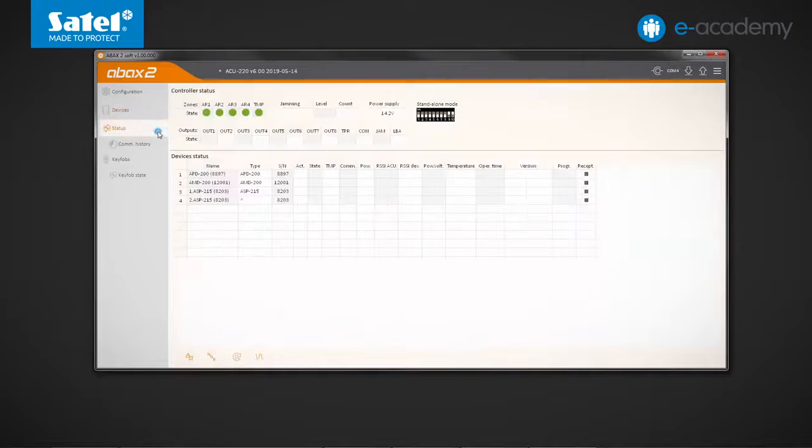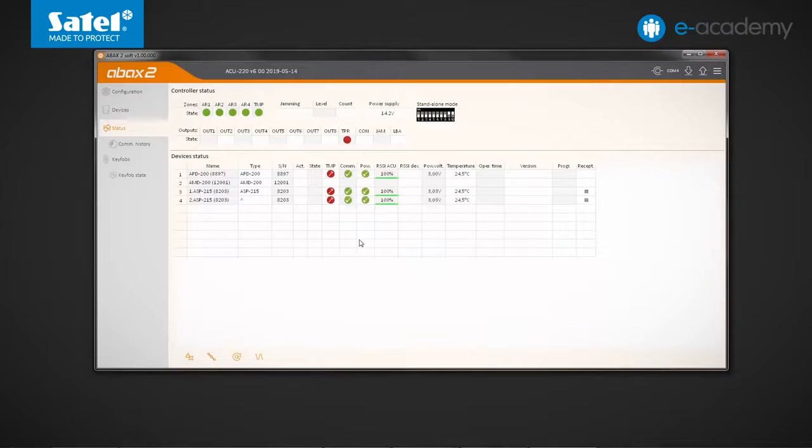Let's go to the status tab. After a while, you can see that the information about tamper memory, power supply voltage, firmware version of registered wireless devices has appeared in the table cells. Further details of the status of individual devices will be discussed next time.